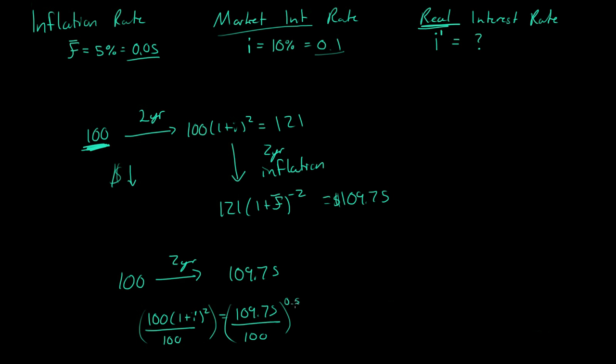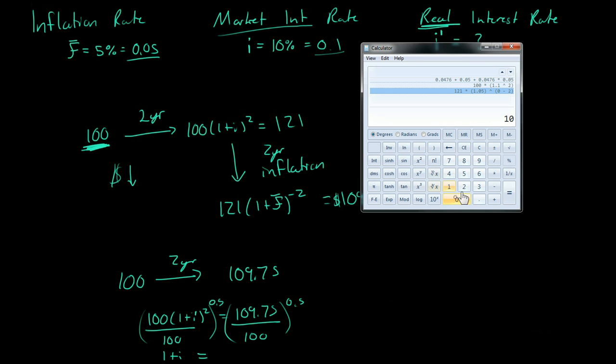So to the power of 0.5, or sorry, not 0.5. Or yes, to the power of 0.5 to both sides. So then what we get is 1 plus i is equal to 109.75 divided by 100. That's equal to 109.957. Now we're going to take that to the power of 0.05. So to the power of 0.5.